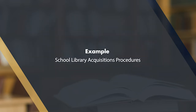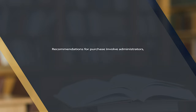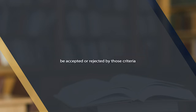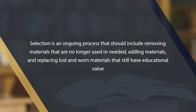School librarians are also responsible for weeding or deselecting collection materials following policy guidelines, as well as making decisions about whether gift items will be accepted. In a school library acquisition procedure, professional personnel will evaluate available resources and curriculum needs and will consult reputable, professionally prepared selection aids. Gift materials should be judged by the selection criteria and accepted or rejected accordingly. Selection is an ongoing process that includes removing materials no longer used, adding materials, and replacing lost and worn-out materials that still have educational value.